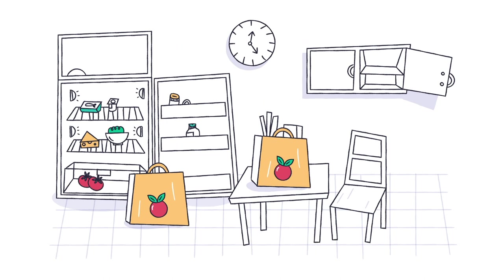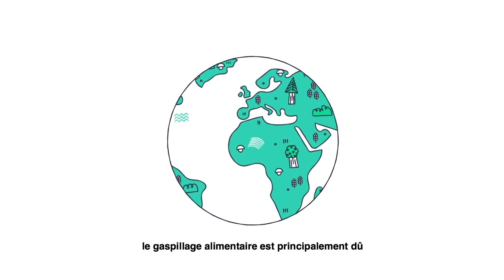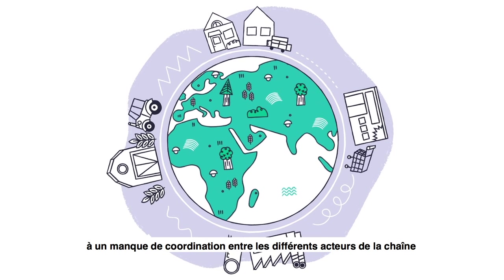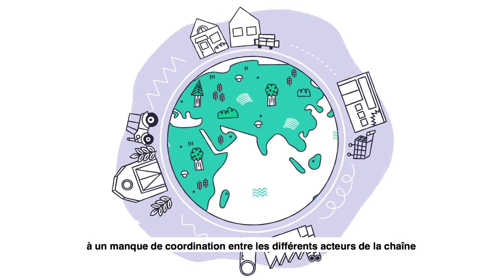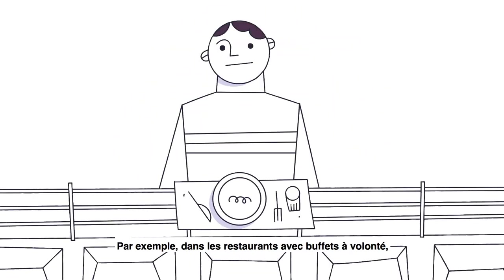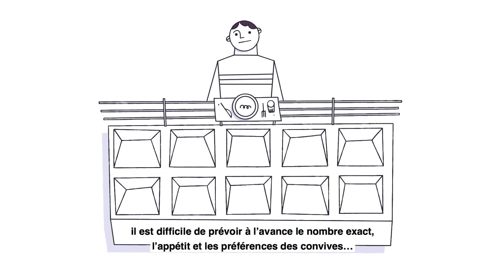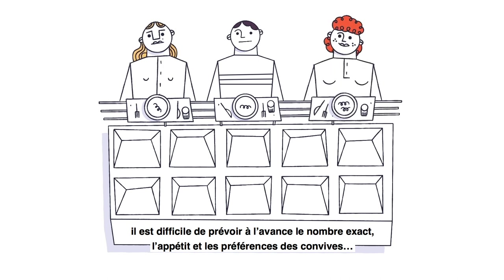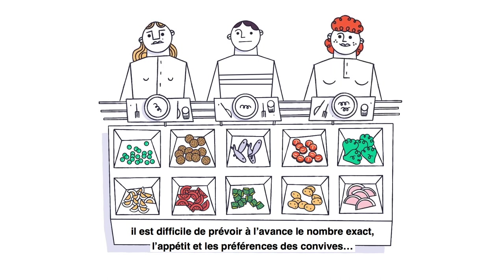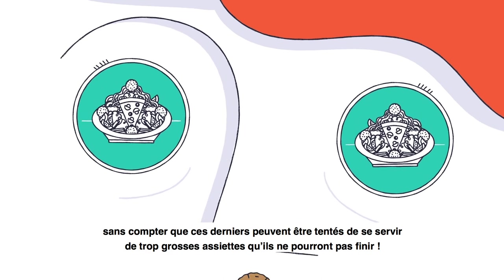In developed countries, food waste usually occurs due to a lack of coordination between the different parts of the food supply chain and consumer behavior. For example, in restaurants with buffets, it's difficult to predict in advance the exact number, appetite, and preference of the customers — not to mention that they might be tempted to take portions that are too big to finish.